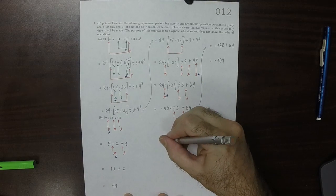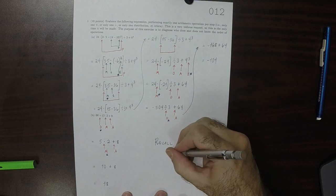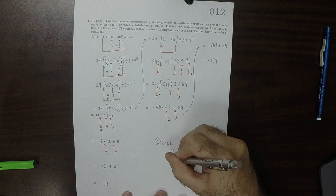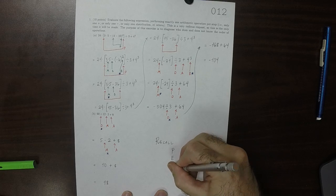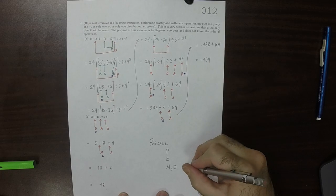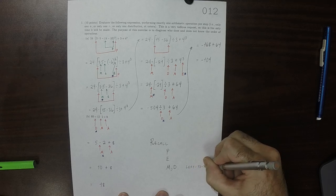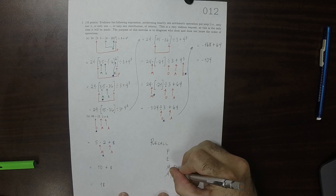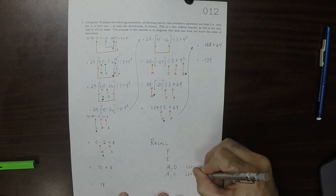To remind you the way all of this worked: this is the order of operations. Parentheses always occur first. When there are no parentheses, exponents always occur first. When there are no parentheses or exponents, multiplies and divides occur first, and these occur left to right. If there are no parentheses, no exponents, no multiplies or divides, then the adds and subtracts are carried out next, and ties are broken left to right.